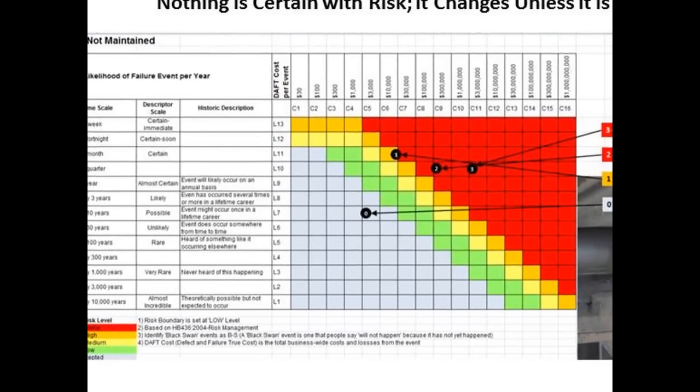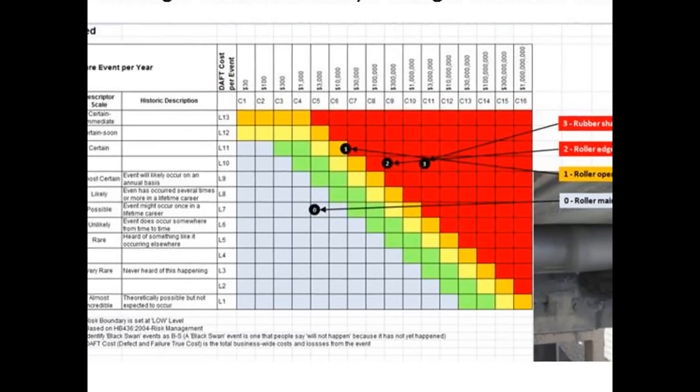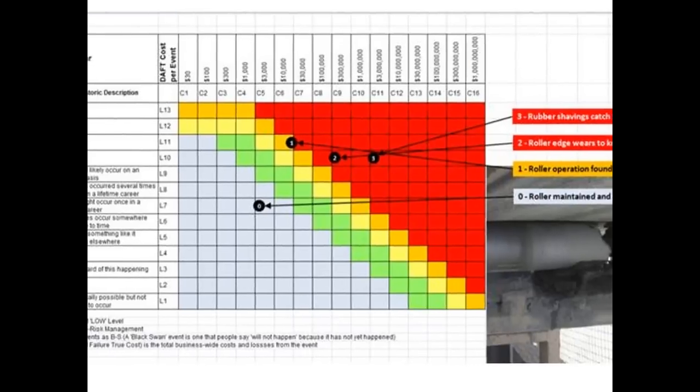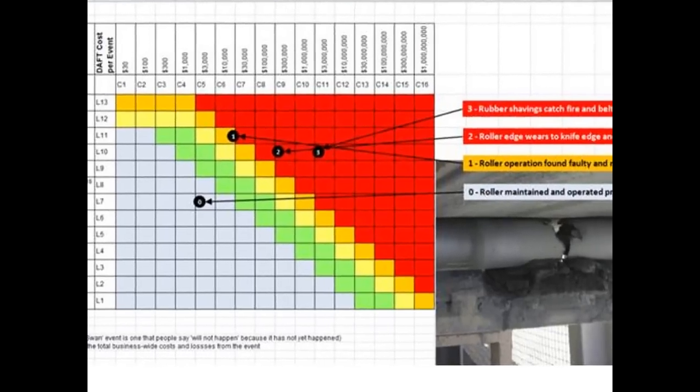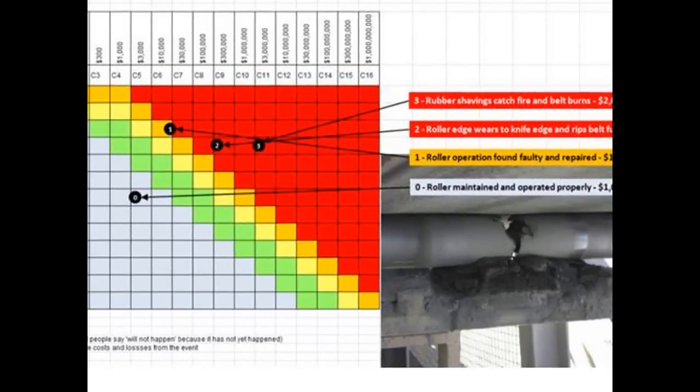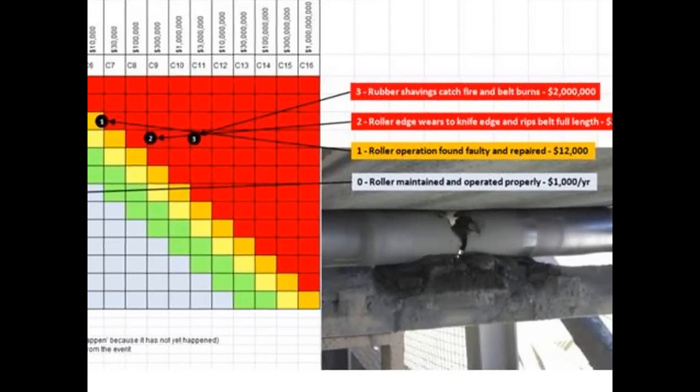I can model the various risk scenarios depending on what happens. It doesn't mean there will be a burnt conveyor every time there's a knife edge, or a torn belt every time. But with a knife edge there all the time, the opportunity is there all the time, and I'm counting on chance not happening. While the conveyor roller is working properly — rotating as it should — the risk is acceptable in the blue zone. Once the roller seizes and no longer turns, the risk begins to increase, wearing away until the knife edge gradually appears.